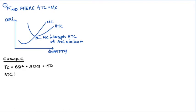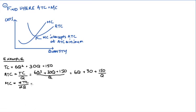So average total costs would be total cost divided by q. That's going to be 6 times q squared plus 30q plus 150 all over q, which is equal to 6q plus 30 plus 150 over q. Our marginal cost is the derivative of our total cost with respect to q, which is 12q plus 30.